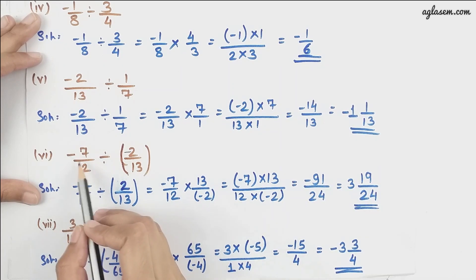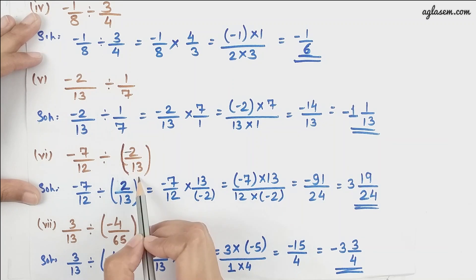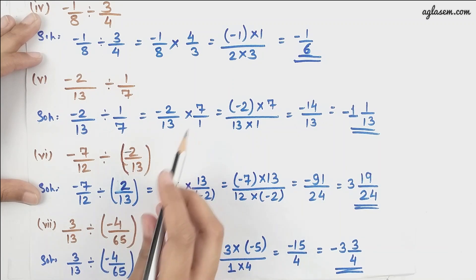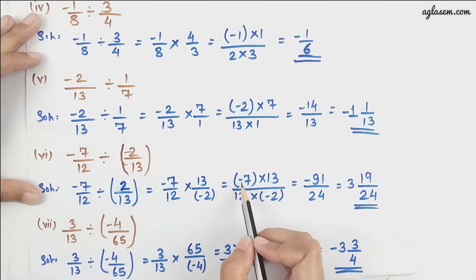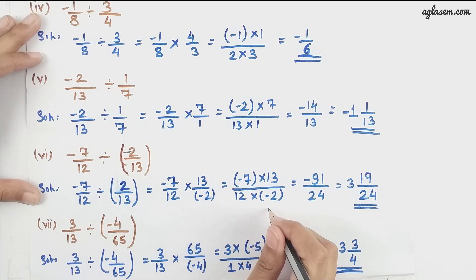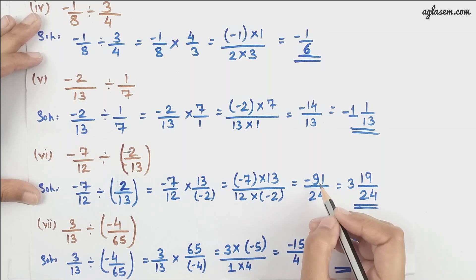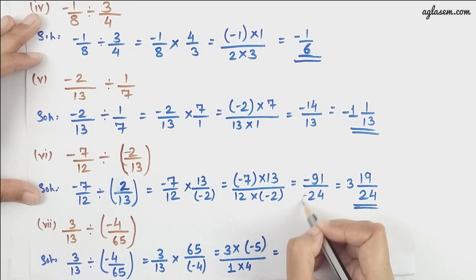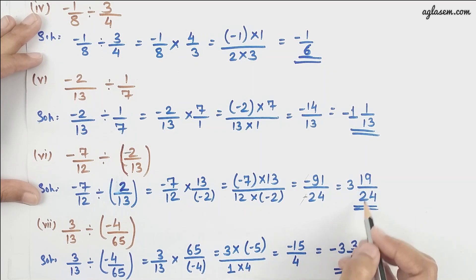Next, -7/12 divided by (-2/13). We reciprocal the value and get (-7 × 13) / (12 × (-2)). Both signs cancel out, giving us 91/24, which as a mixed fraction is 3 19/24.